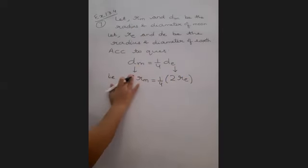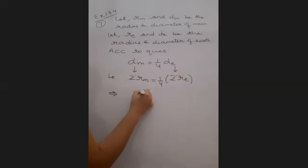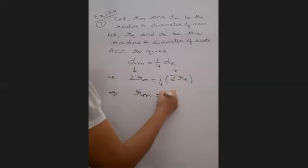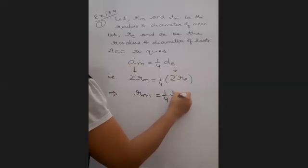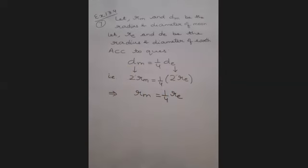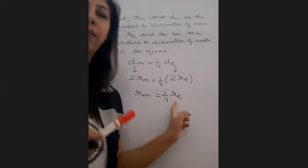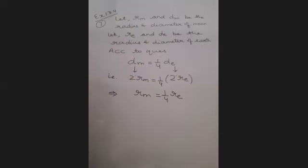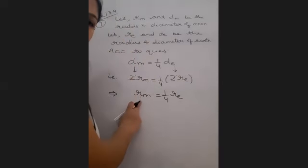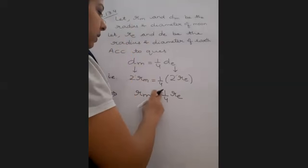Now this two and this two will get cancel. So what do we get? That rm is equal to 1 by 4 re. Radius of moon is 1 by 4 the radius of earth.